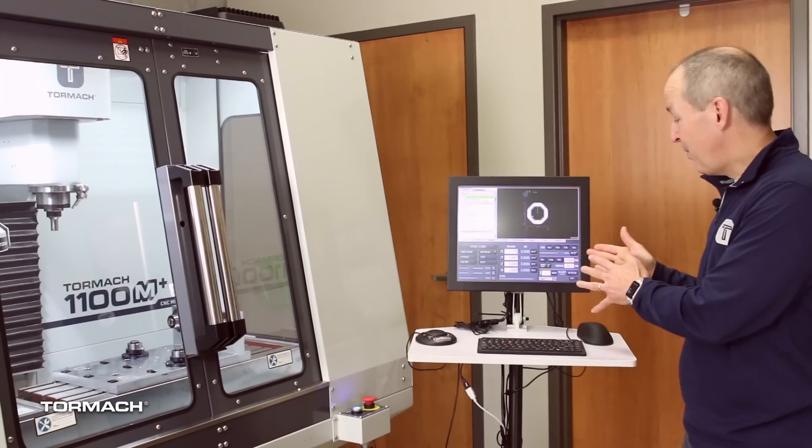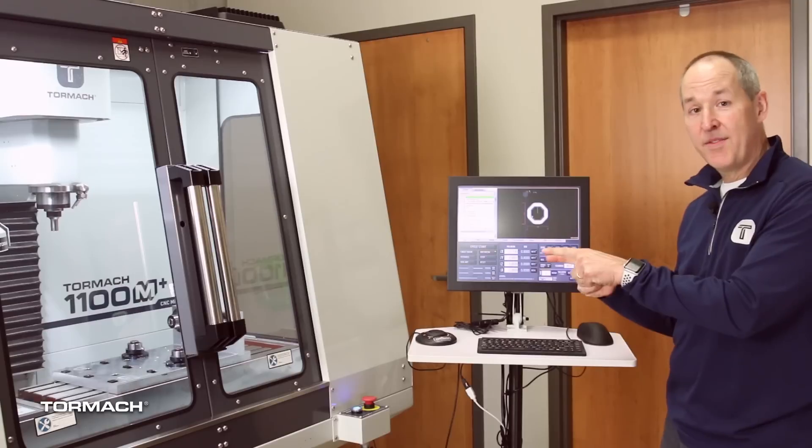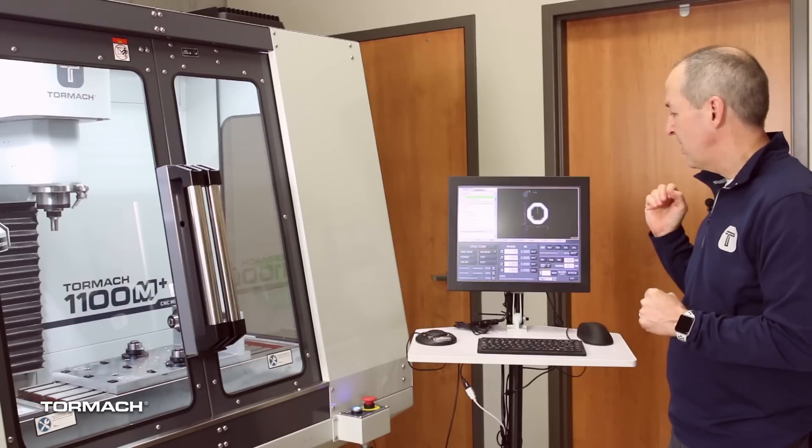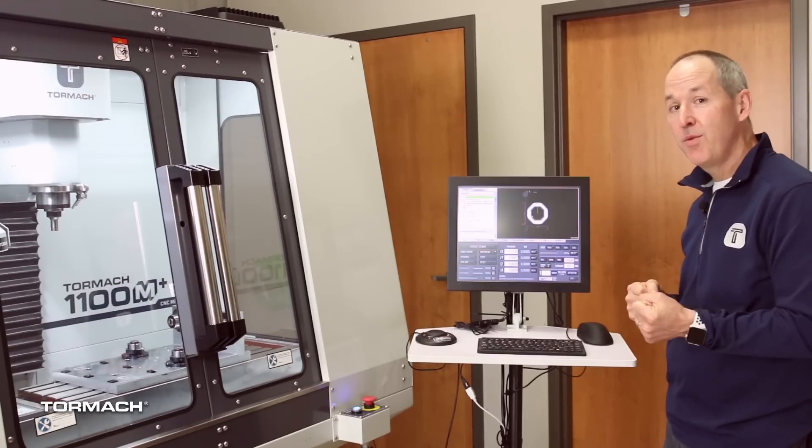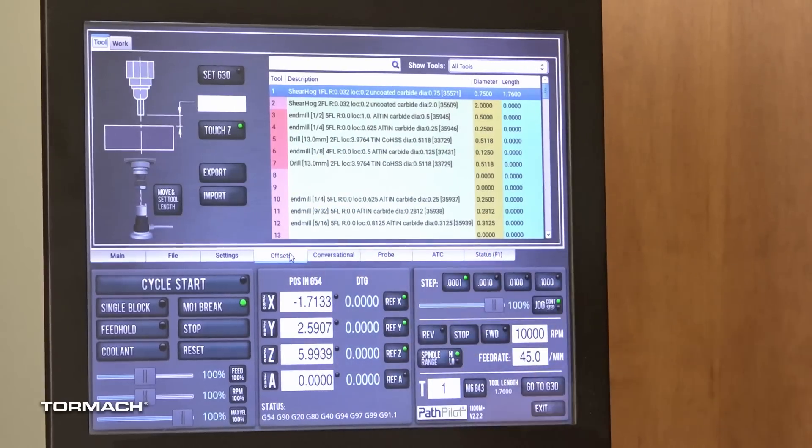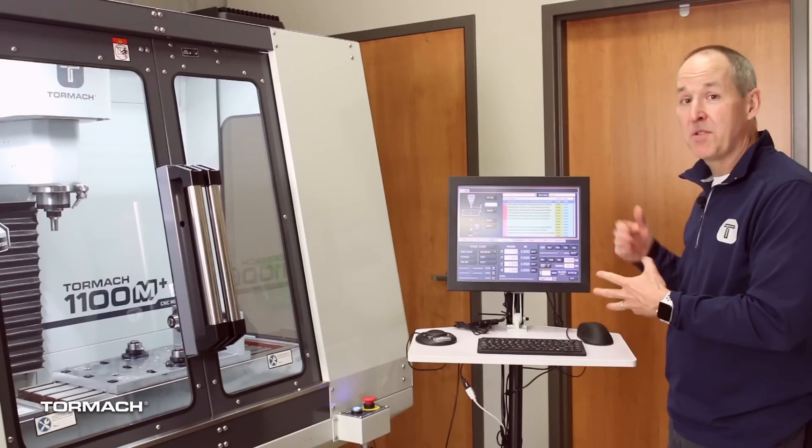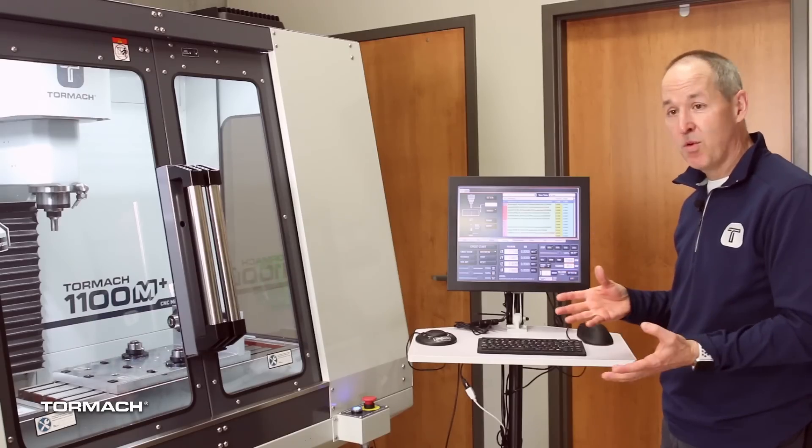So here we are in PathPilot 2.2.2. We're on an 1100M Plus and wanted to lead off by showing you some of the new features in the tool table. On the offsets tab we have a 1000 tool tool table. Really handy, plenty of room.